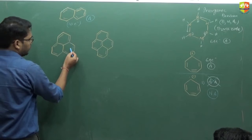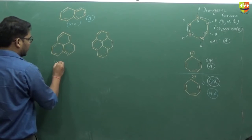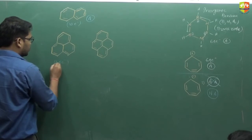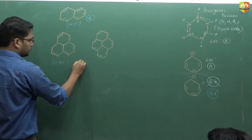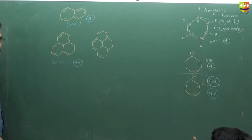1, 2, 3, 4, 5, 6 — that's 12 pi electrons. This is anti-aromatic.